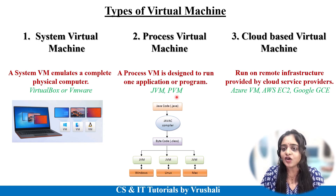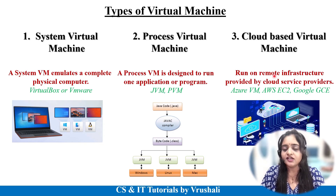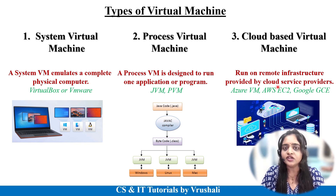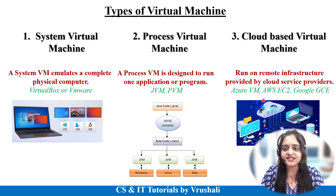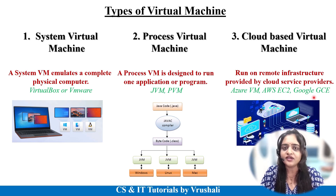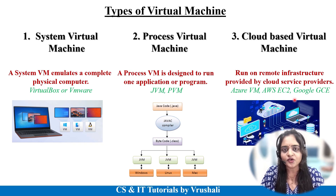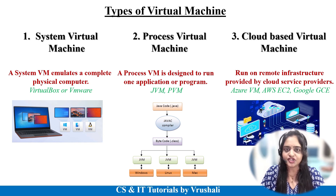The next type is a cloud-based virtual machine. A cloud virtual machine is hosted on the internet in the cloud, not on your laptop or PC. You can take a cloud-based virtual machine on rent or use it remotely. The best examples are Azure Virtual Machine, AWS EC2 instance, and GCE (Google Cloud Engine). You can use these for website hosting, enterprise application hosting, or other purposes.